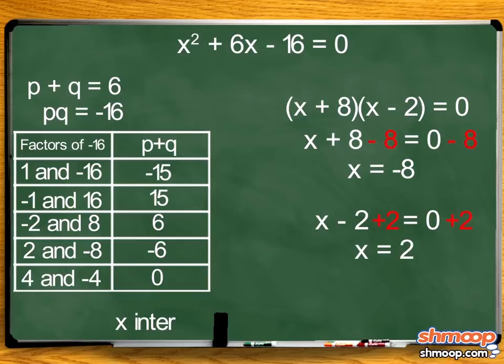So our parabola goes through the x-axis at points (-8, 0) and (2, 0).